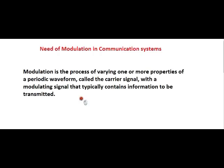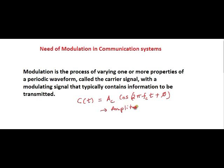Say this is about carrier signal C(t), let it be AC cos(2π fc t + φ). Modulation is the process of varying one or more properties of a periodic waveform. By referring to one or more properties, we are referring to amplitude — in this case AC — and then fc, that is frequency, and the third one is phase, that is φ.